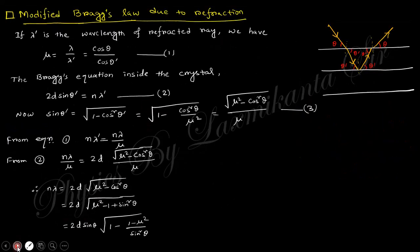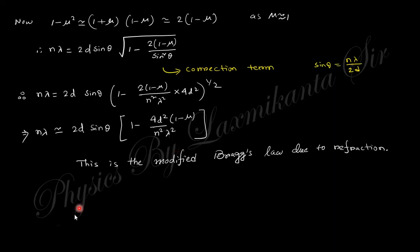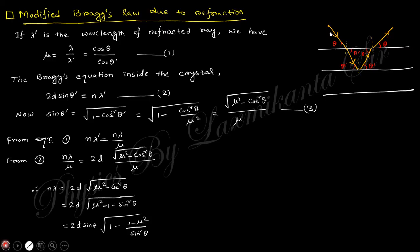This is the modified law for refraction. Because these are reflected from here also, the law changes and this will be like that. So this is the modified Bragg's law due to refraction. Actually we neglect the refraction and take this as transmission in this plane, but actually these are refracted so the change will be like that.